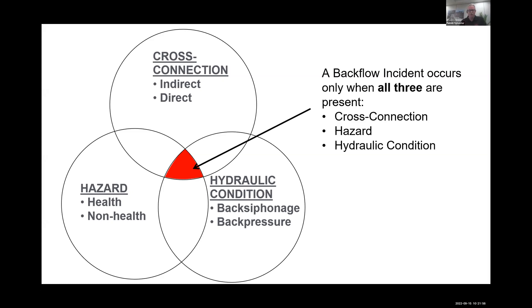Three things have to occur all at the same time: a cross connection, a hazard, and a hydraulic condition. That's when we have an incident — something more serious than just back siphonage occurring. If back siphonage is occurring and air is being sucked in, that indicates there's a hydraulic problem, but that's not an incident in the sense that contaminants or pollutants got into the distribution system.